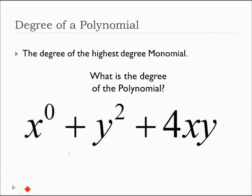And this one has a degree of 0, 2, 1, 1, 2. So there's two 2nd degree monomials, and that's okay. It just means it's a 2nd degree polynomial.